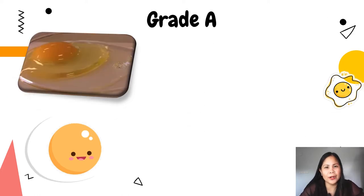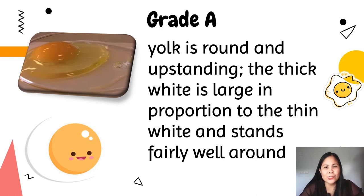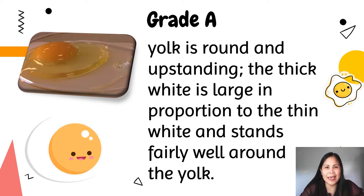For Grade A, the yolk is round and upstanding. The thick white is large in proportion to the thin white and stands fairly well around the yolk. Grade A eggs, when broken, have a moderate amount of spread. The white is reasonably thick and stands fairly high. The chalaza is prominent and the yolk is firm and stands fairly high. Grade A is the most commonly used grade and is suitable for all types of use.